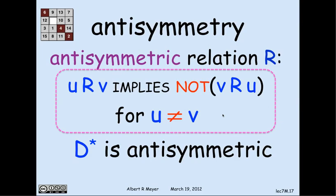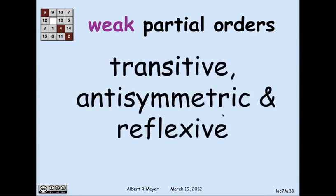The walk relation in a digraph, including length-0 walks, is antisymmetric. A weak partial order is transitive, antisymmetric, and reflexive. Note: asymmetric implies nothing is related to itself; reflexive implies everything is related to itself. It's possible for a relation to be transitive and antisymmetric but neither strict nor weak — where some elements are related to themselves and some are not — but those don't come up much and we don't give them a special name.